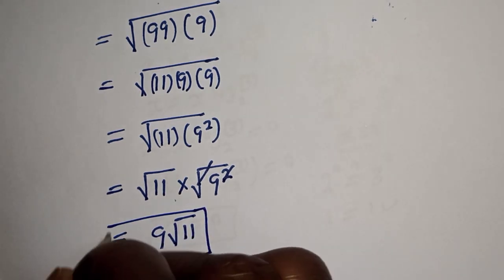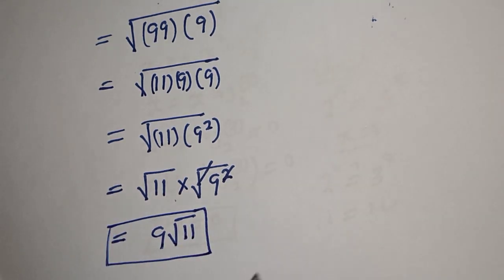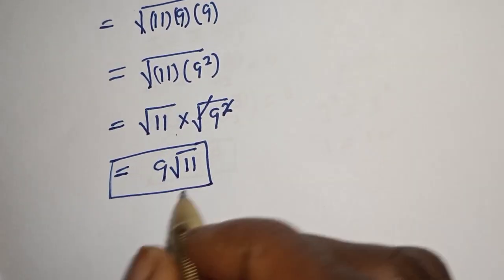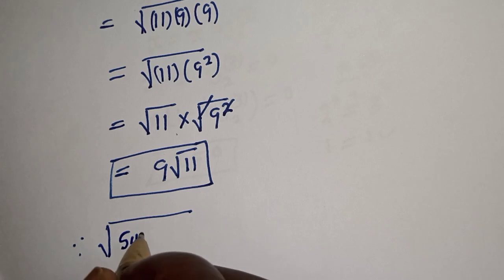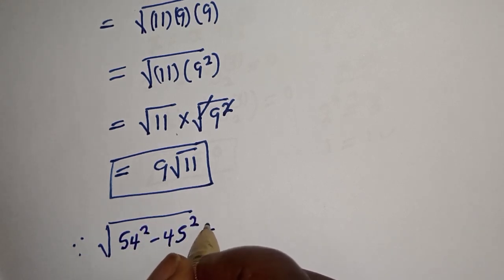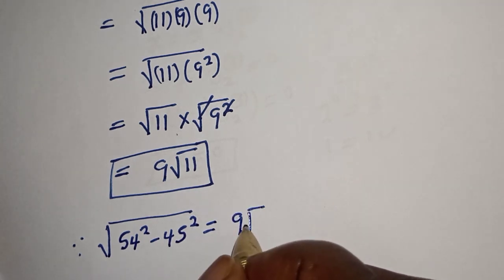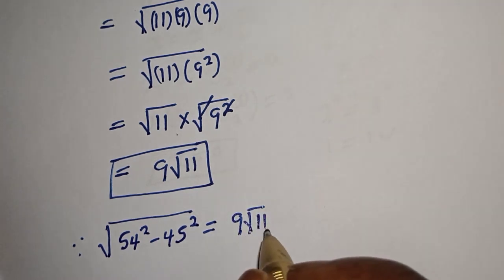And this is the final answer. Therefore, square root of 54 squared minus 45 squared is equal to 9 square root of 11.